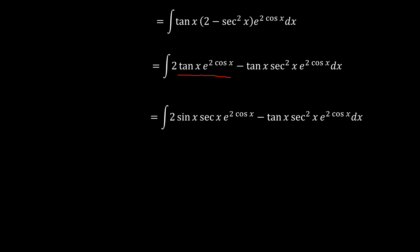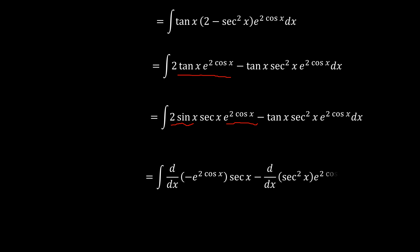This term can be expressed as the derivative of negative e^(2cos x), since when we differentiate e^(2cos x), we get e^(2cos x) times the derivative of 2cos(x), which is negative 2sin(x). And the second term is the same as the derivative of sec²(x). So this is very interesting.